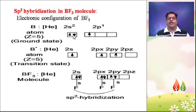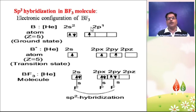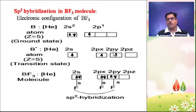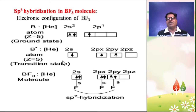Now let's discuss the electronic configuration of BF3. Boron atom has Z equal to 5. In the ground state, the valence shell configuration is 2S2, 2P1. So in the ground state, boron atom has two paired electrons and one unpaired electron. By gaining some energy, boron atom in the transition or excited state promotes one electron of the 2S orbital to the 2PY vacant orbital.